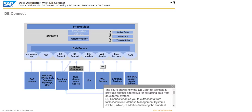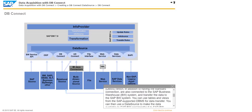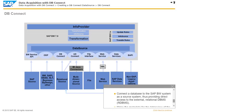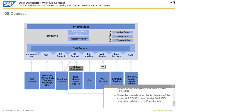To load the data from an SAP-supporting DBMS into SAP BW using dbConnect, do the following: Connect a database to the SAP BW system as a source system, thus providing direct access to the external relational DBMS (RDBMS). Then make the metadata for the table or view of the external RDBMS known to SAP BW using the definition of a data source.